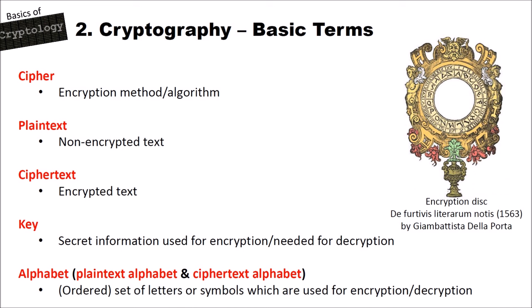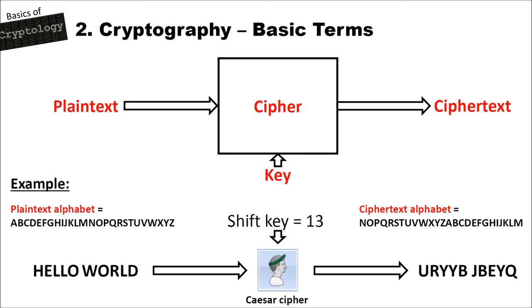Then we have the alphabet, which can be split into a plaintext alphabet and a ciphertext alphabet. An alphabet is an ordered set of letters or symbols which are used for encryption or decryption. Here I try to show how all these words are connected. The plaintext goes into the cipher, and also the key goes into the cipher. The cipher then performs a method or algorithm on the plaintext with the help of the key, and the result of the cipher is the ciphertext.